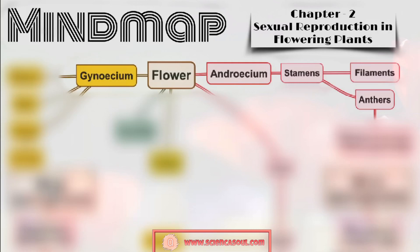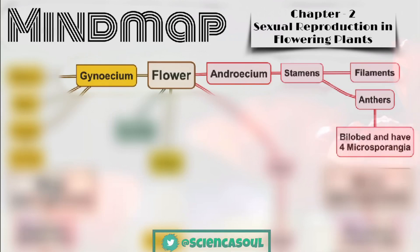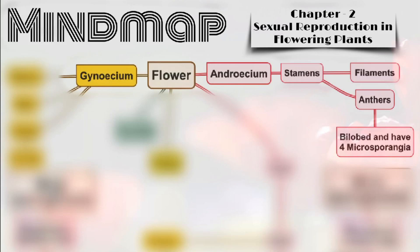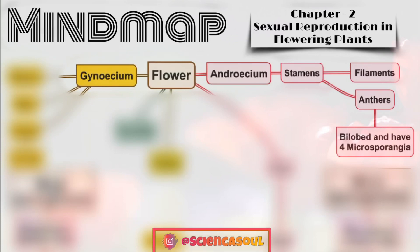The proximal end of the filament is attached to the petal of the flower - this has been asked in previous year NEET exams, so underline this. Next, the anther is bilobed and has four microsporangia. A typical angiosperm anther is bilobed with each lobe having two theca; they are dithecous. The anther is a four-sided tetragonal structure consisting of four microsporangia located at the corners, two in each lobe.